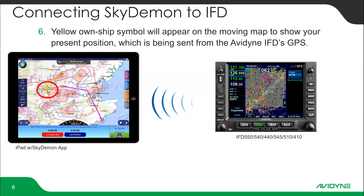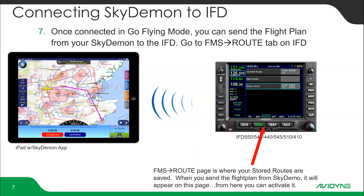I created this flight plan at home, came out to the airplane, connected, and I've got an own ship showing. Now I want to load this flight plan into the IFD on the panel. Make sure you're on the Routes page, which is the FMS page under the Route tab — this is where stored routes are saved.